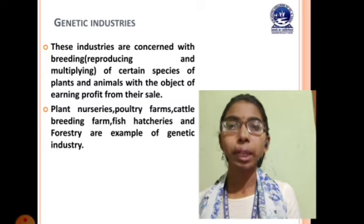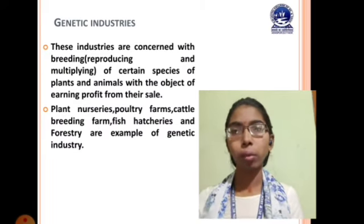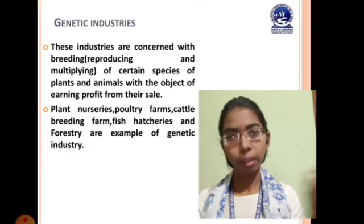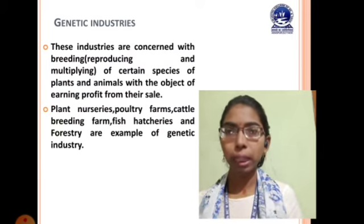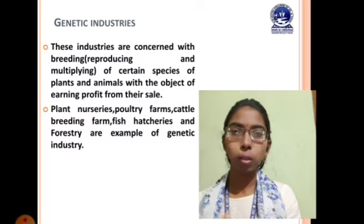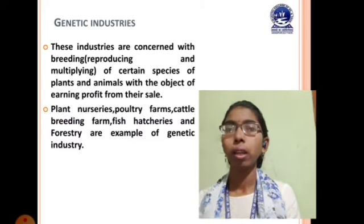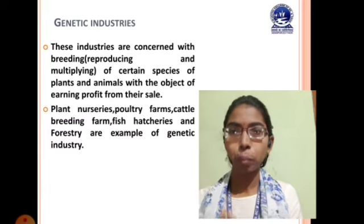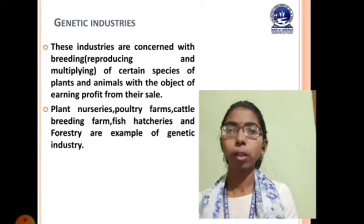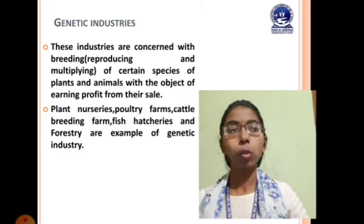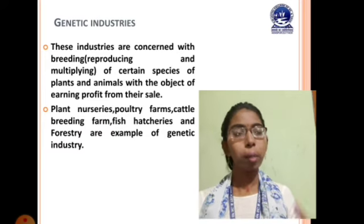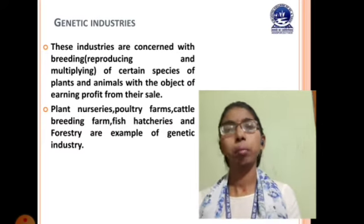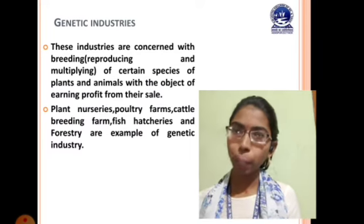Examples of genetic industry include plant nurseries, poultry farms, cattle breeding farms, fish hatcheries, and forestry. In all these examples, you are essentially taking care of things that come into existence naturally — trees, plants, cattle, animals, or forests. You are multiplying their numbers, selling them, and thereby earning profit.